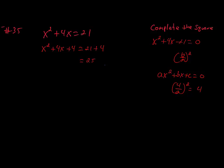A perfect square trinomial means: x squared is a perfect square — x times x. The constant 4 is a perfect square — 2 times 2. And the middle term is 2 times the square root of the leading term times the square root of the constant. We can verify this is indeed a perfect square trinomial, so we end up with x plus 2 times x plus 2.